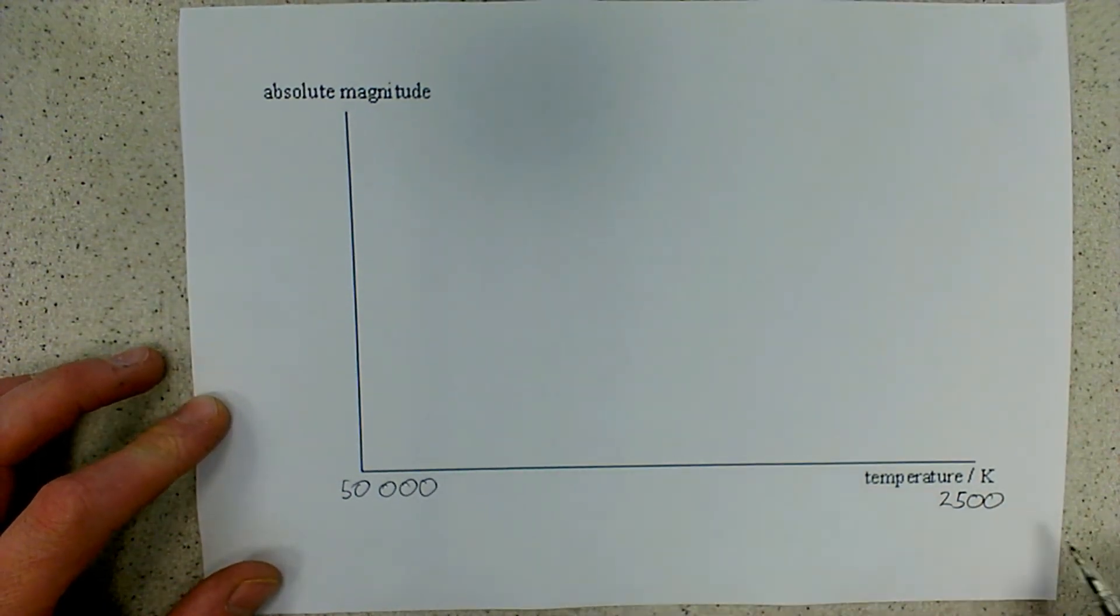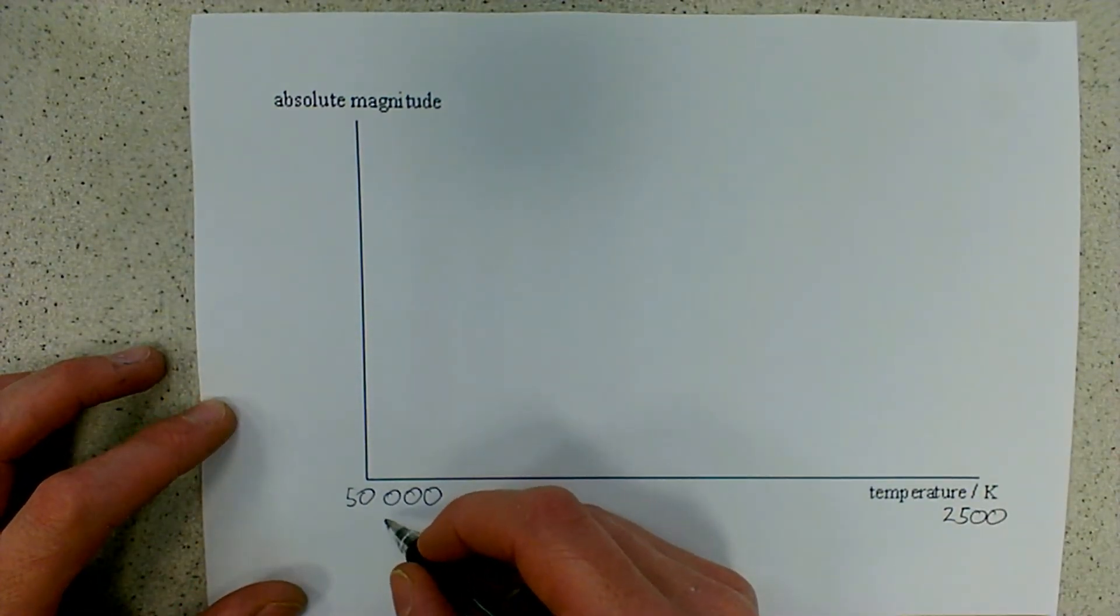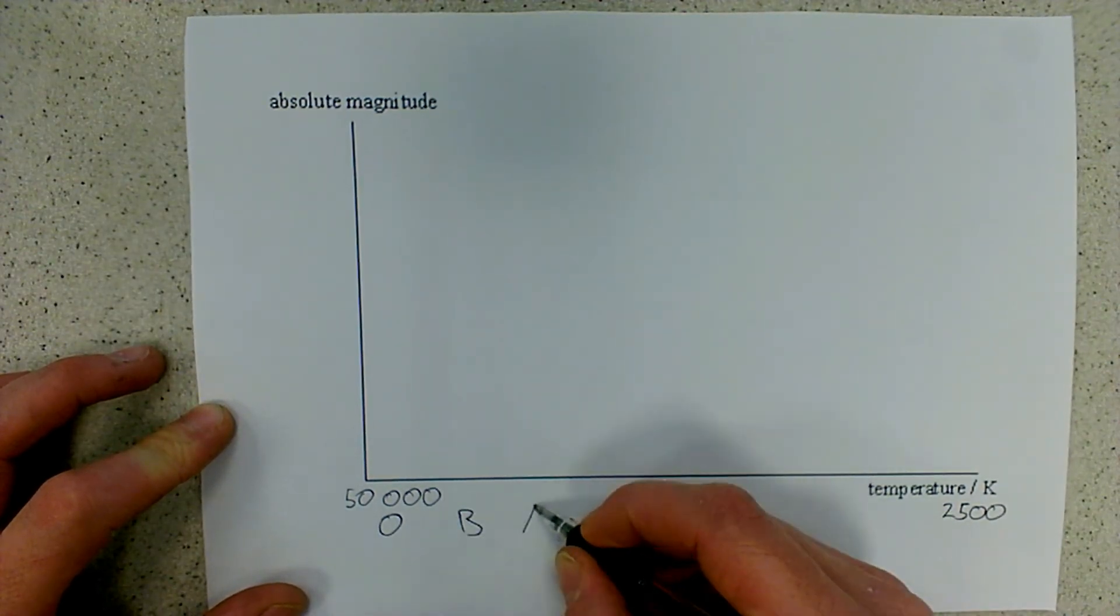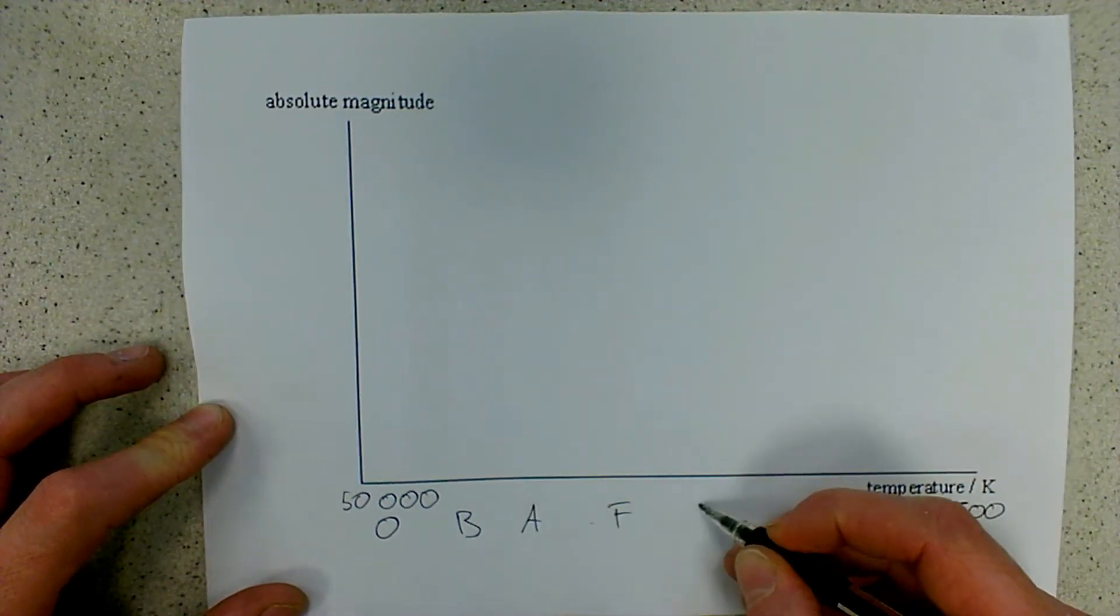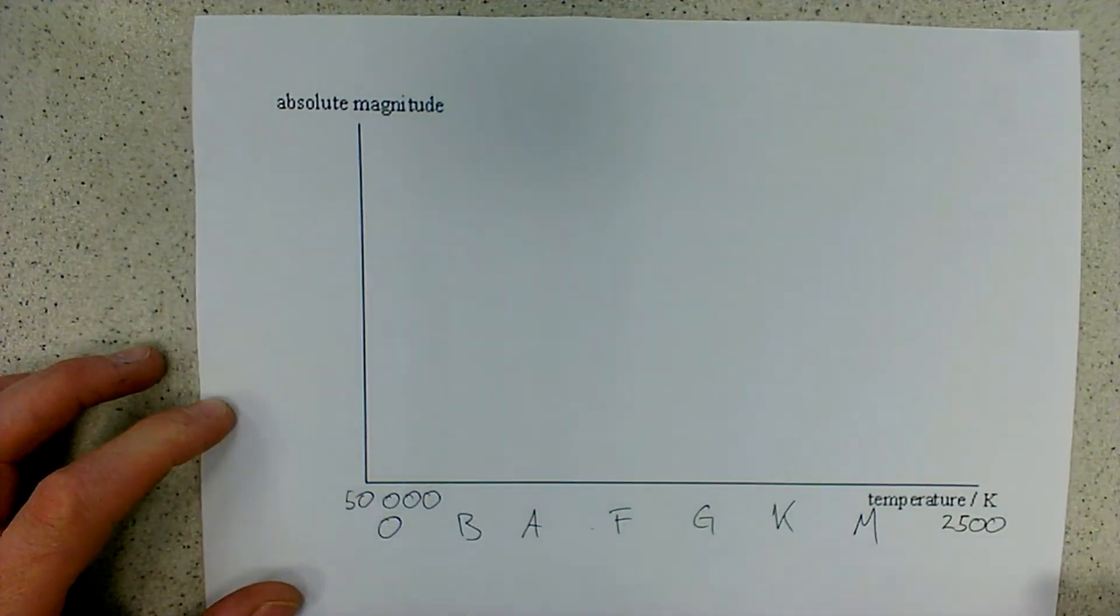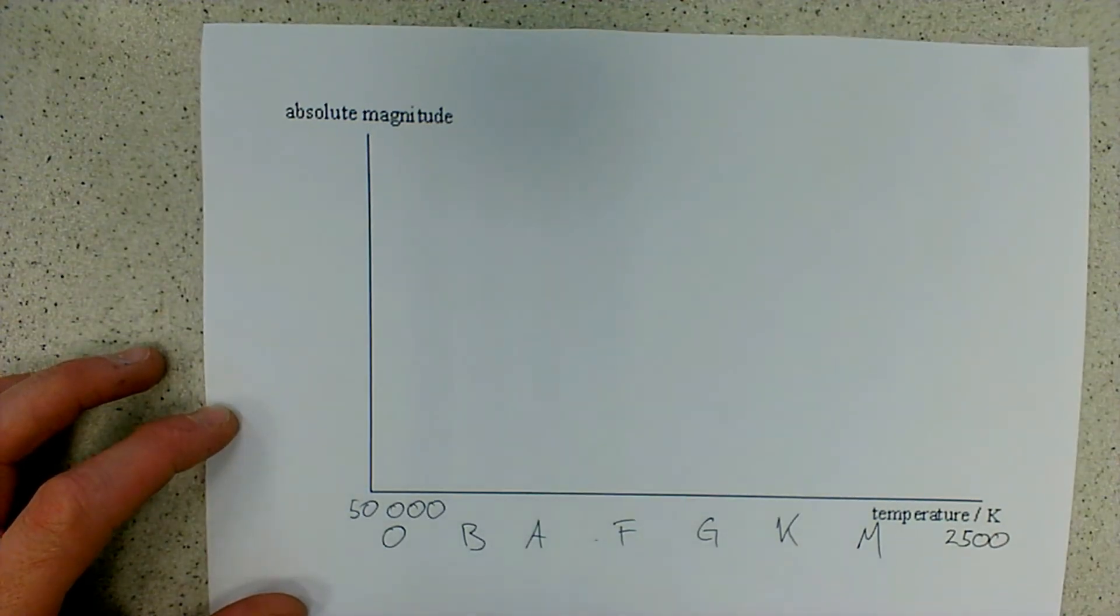We don't need to put any subdivisions down here on this axis, this would be absolutely fine. You may want to write down the spectral classes as well and that might help you organize your diagram. So we have O-class, B, A, F, G, K and M, and that might just help you organize your diagram and remember 2,500 Kelvin would be part of the M-class.